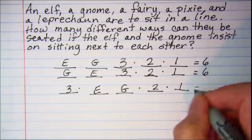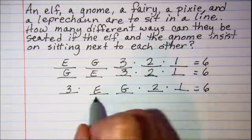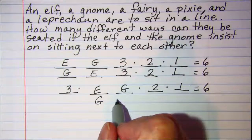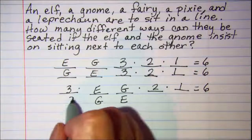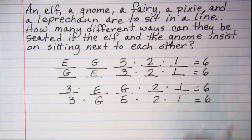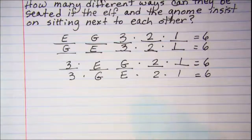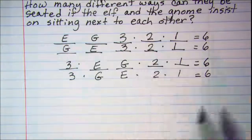And then when I switch those chairs, I could put my gnome here in this chair, and my elf in this one. So I have three, two, and one like this.